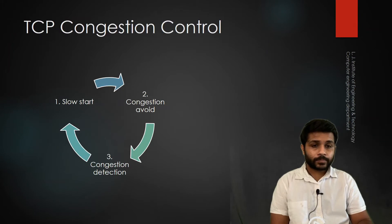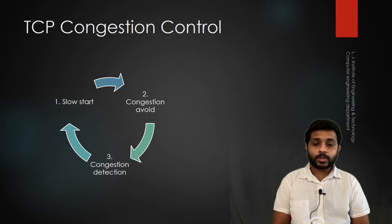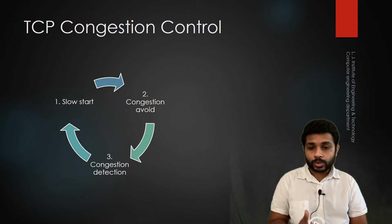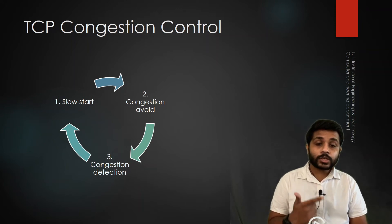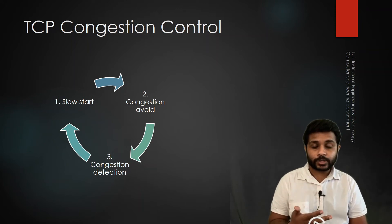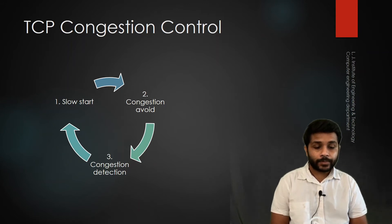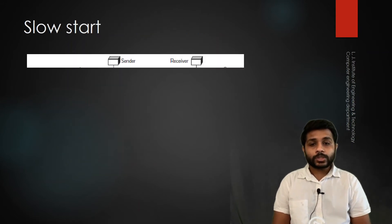Now let's see how TCP handles congestion. TCP handles congestion in three ways: there is a Slow Start phase, there is Congestion Avoidance, and there is Congestion Detection. Let's see these steps one by one.